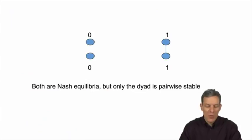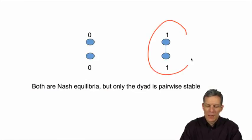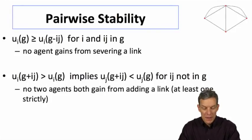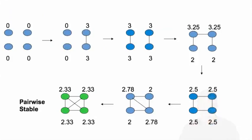So now when we go back to that example we had before, both are Nash equilibria, but this is the only pairwise stable network. Both people would gain by adding this. Pairwise stability just says this is the only stable network.